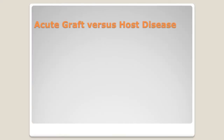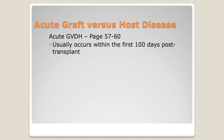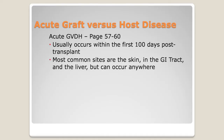The first type we're going to talk about is acute graft versus host disease, discussed in more detail on pages 57 through 60 of the white binder. This is thought to occur within the first 100 days post-transplant — it's what we consider early graft versus host disease. The most common sites for this to happen are going to be the skin, the GI tract, and the liver.